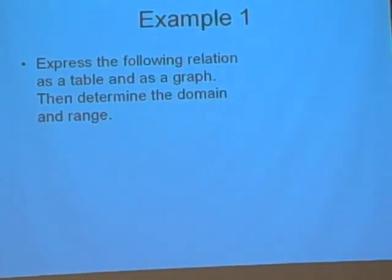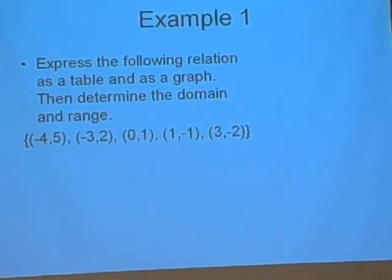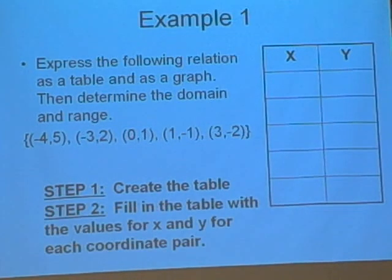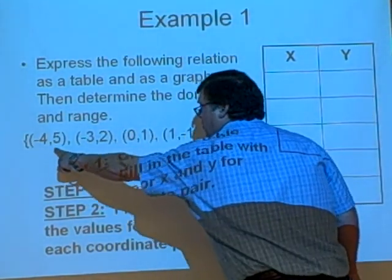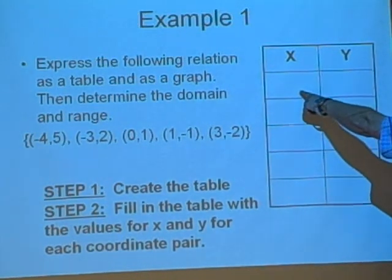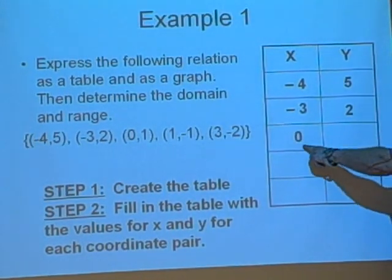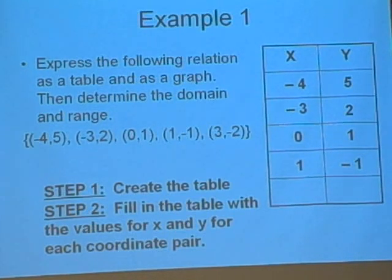Now here we've got an example. Express the following relation as a table and as a graph. Then determine the domain and range. So we're given this relation: {(-4,5), (-3,2), (0,1), (1,-1), (3,-2)}. To express it as a table, we would have to first create the table, which would look like this, X and Y values. Step 2, fill in the table with the values for X and Y for each coordinate pair. The first coordinate pair is (-4,5). I put the -4 in for the X. I put a 5 in for the Y. Then I put -3 and 2 for the next point. 0 and 1. 1 and -1. 3 and -2 for the last one there. I've now created a table of my relation.